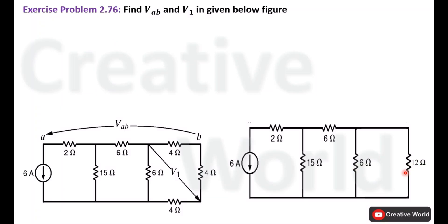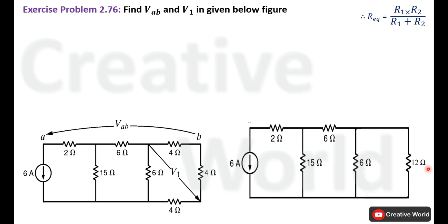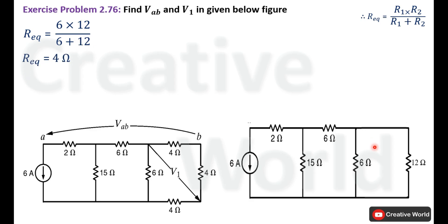Now these two resistances are in parallel connection. We find their equivalent resistance using the formula: R equivalent equals the product of both resistances divided by their sum. Here R1 is 6 Ohm and R2 is 12 Ohm. The product of 6 and 12 is 72, and their sum is 18. So 72 divided by 18 gives 4 Ohm.